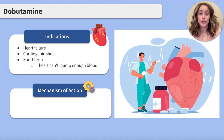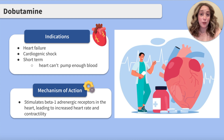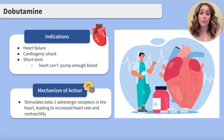Dobutamine is in a drug class known as sympathomimetics, which mimic the effects of the sympathetic nervous system. Dobutamine works by stimulating beta-1 adrenergic receptors, which are found primarily in the heart, leading to an increased heart rate and contractility. This results in increased cardiac output, which improves blood flow and protects organs from damage when the heart's ability to pump is compromised due to conditions such as heart failure.